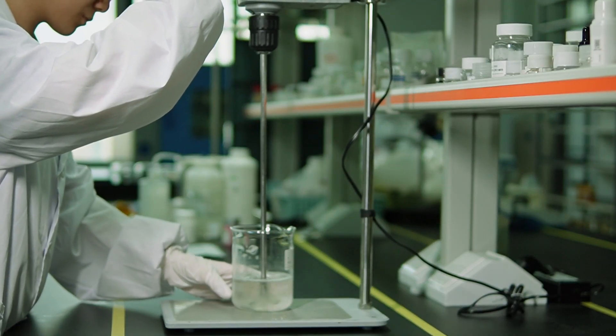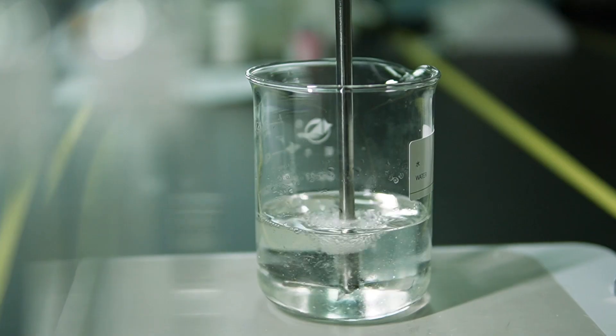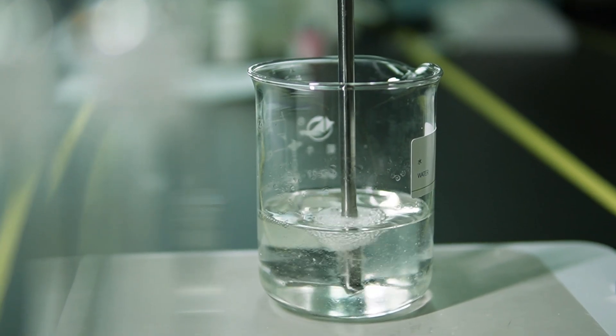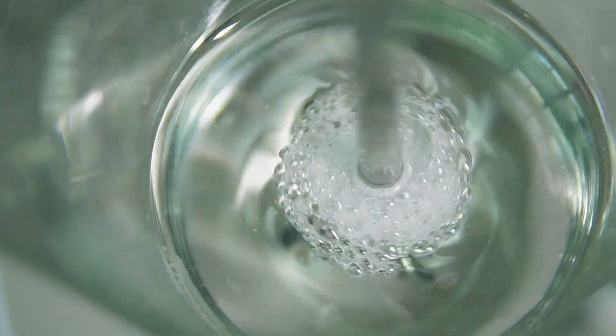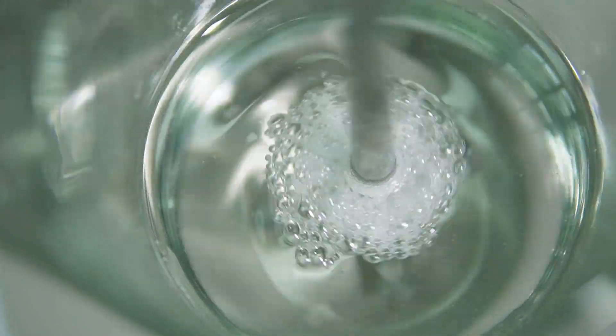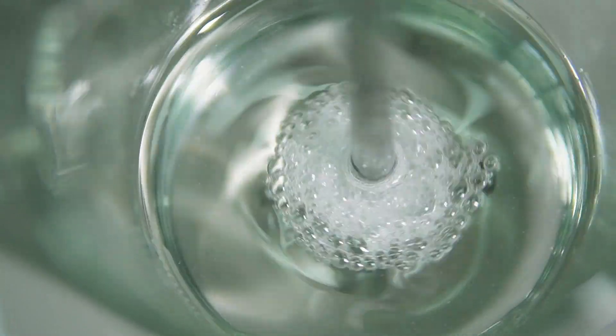Once we've got the CAPB and CDEA in, we keep stirring until everything is nicely mixed and the slurry turns completely transparent. So far, we've laid the foundation for our bath gel, establishing its core functions of foaming and cleansing.